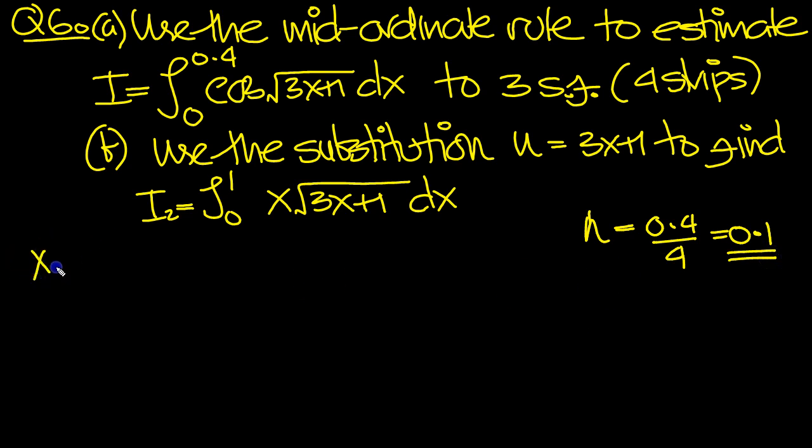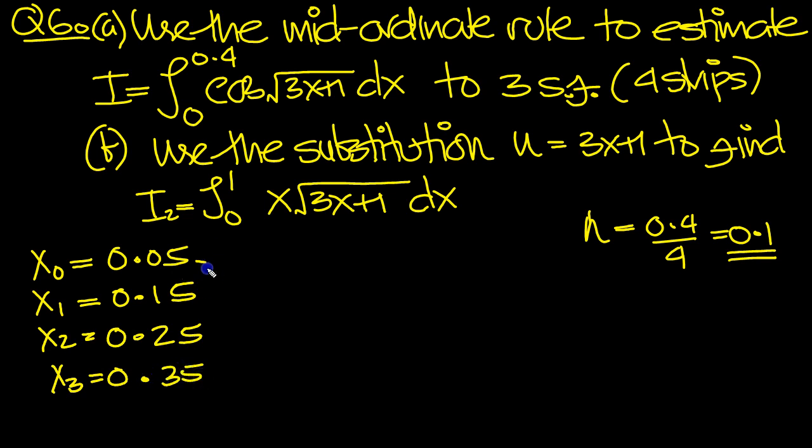So our x-ordinate, the first one, is a mid-ordinate. So we go from 0 to 0.1 and the mid-point of that is 0.05. x1, the interval is 0.1 to 0.2, so the mid-ordinate will be 0.15. And we just continue in that same manner. So x2, mid-ordinate is at 0.25 and x3, 0.35.